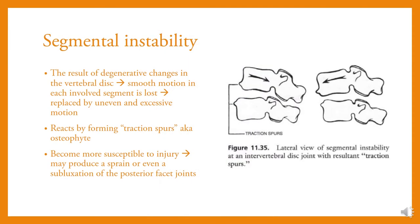Segmental instability results from degenerative changes in the vertebral joints: smooth motion in each involved segment is lost and replaced by uneven and excessive motion. The spine reacts by forming traction spurs, also known as osteophytes, and becomes more susceptible to injury.